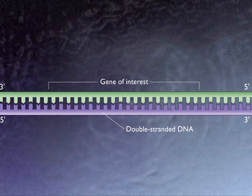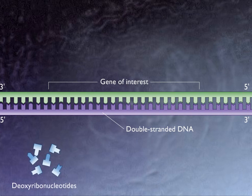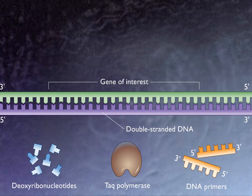The DNA to be amplified is mixed with deoxyribonucleotides, a thermal stable DNA polymerase called Taq polymerase, and DNA primers. The DNA primers hybridize to the ends of the gene to be amplified and provide a starting point for the Taq polymerase.